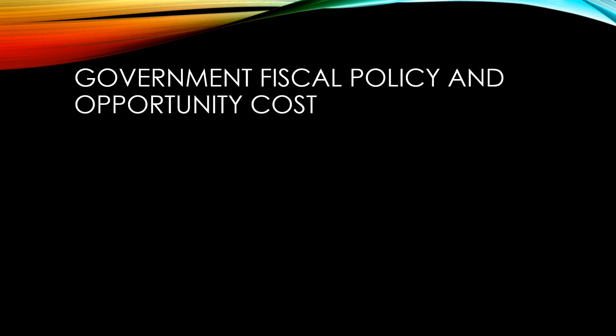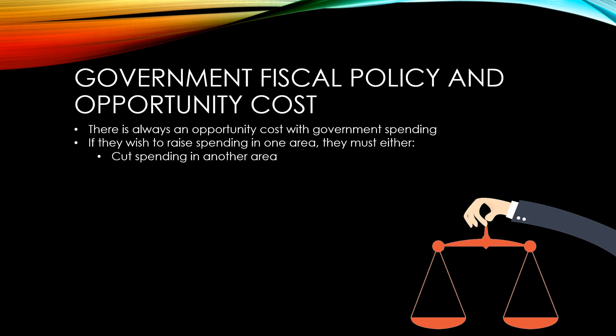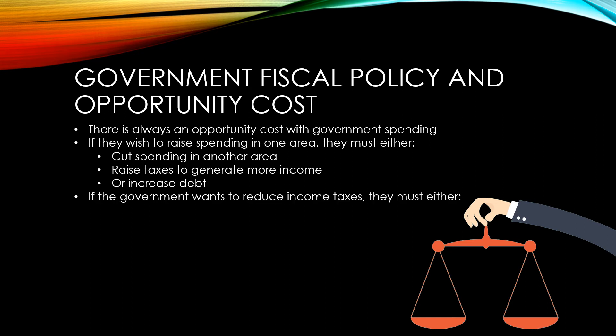When it comes to government fiscal policy, there is always an opportunity cost. If they wish to raise spending in one area, they must either cut spending in another area, raise taxes to generate more income, or increase debt. If the government, on the other hand, wants to reduce income taxes, they must either increase other taxes, reduce spending, or increase debt. So there's always going to be an opportunity cost and people will disagree about the best place that the government should spend their money for the most value to the economy.